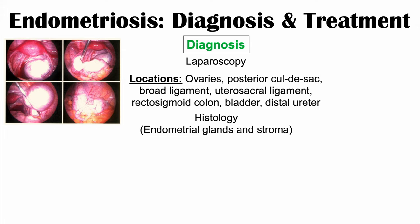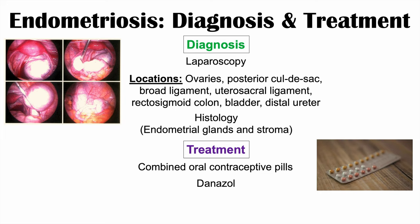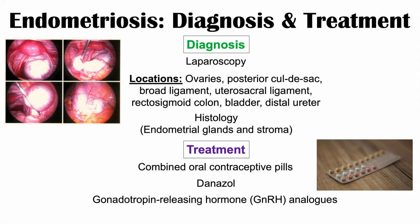Once endometriosis has been diagnosed, how do clinicians treat it? Combined oral contraceptive pills can be used to reduce symptoms by regulating the menstrual cycle, since much of the pain is due to endometrial tissue responding to hormonal changes during the cycle. Danazole can also be used. Clinicians may also use gonadotropin-releasing hormone, or GnRH, analogs, which can shut down the pulsatile nature of GnRH and reduce pituitary-induced fluctuations in hormones like estrogen. In some cases, surgery may be required to remove the endometrial tissue from affected locations.